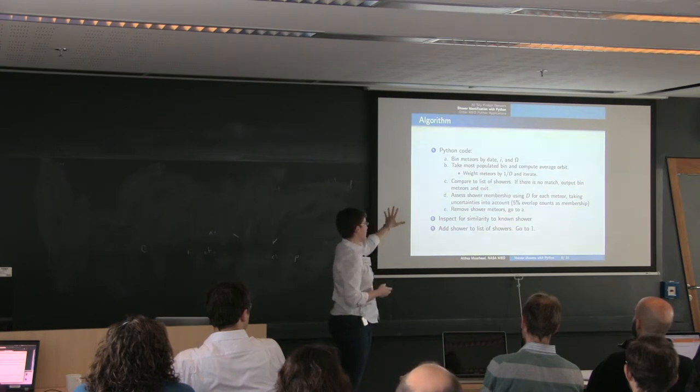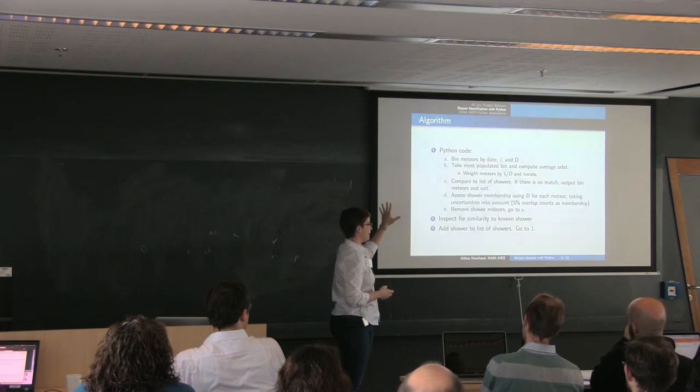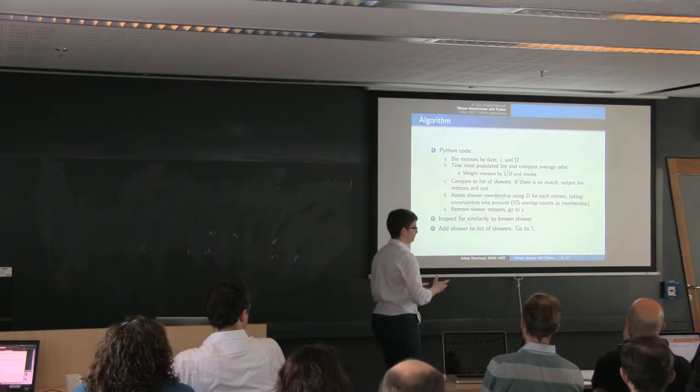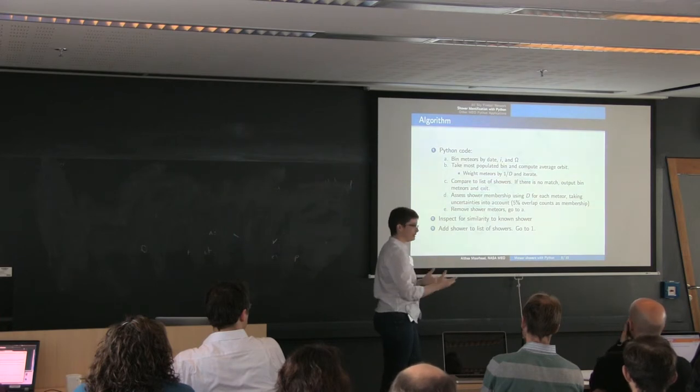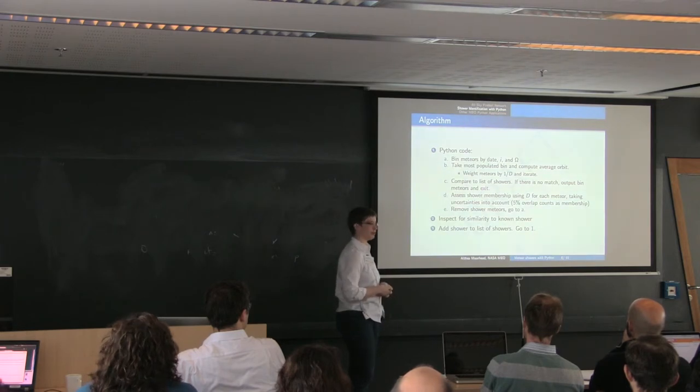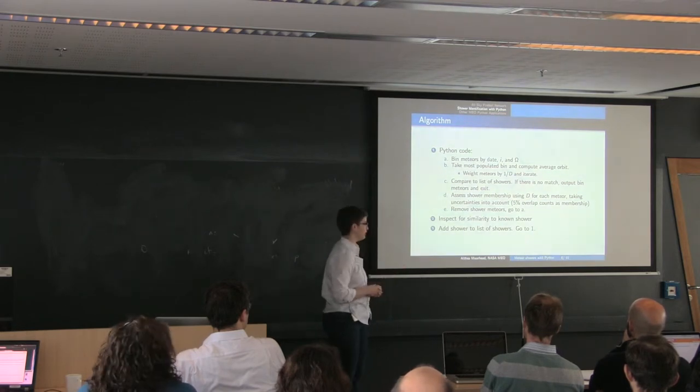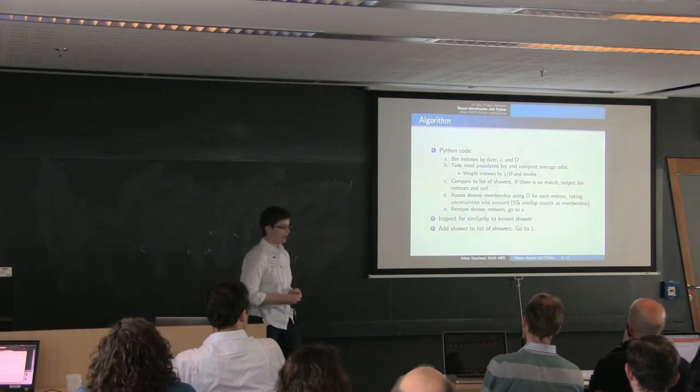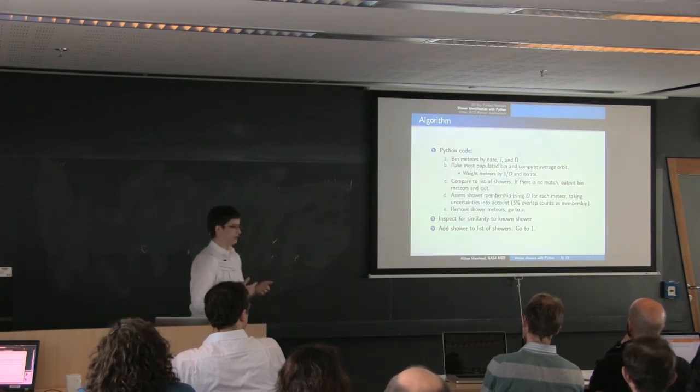Once that's done, the code goes through and identifies members of the shower using this Monte Carlo overlap. And I've just used kind of a rough, if 5% of my clones fall within kind of a standard d parameter cutoff, I count it as a shower member candidate and I go ahead and remove it. So I err on the side of over removal. And that's how we build up a database of showers that we actually see in our all sky network.